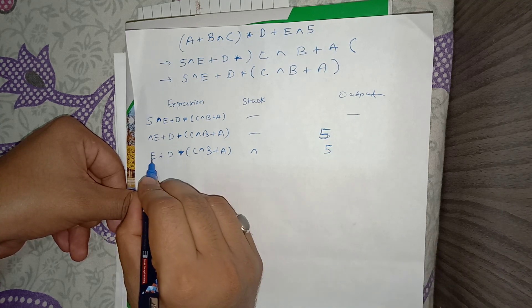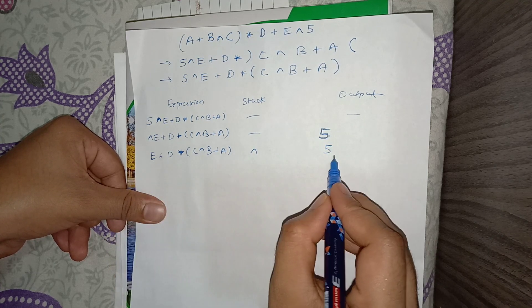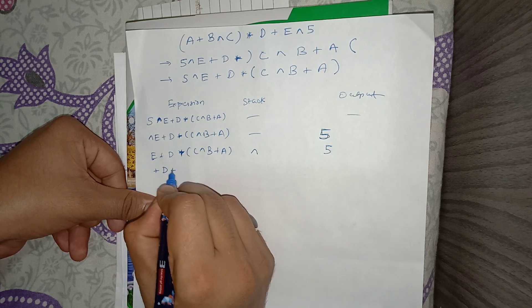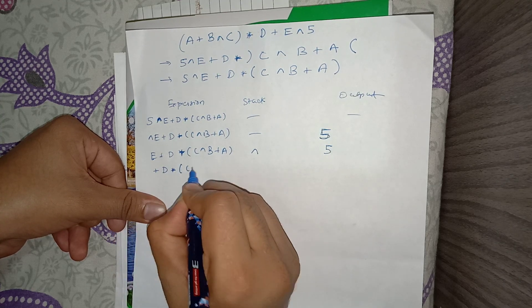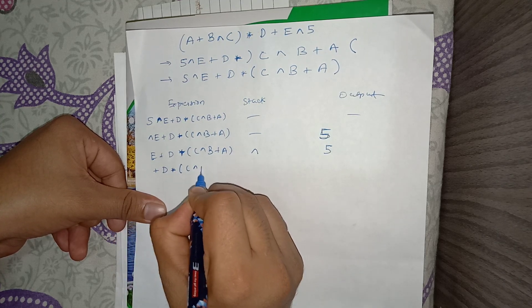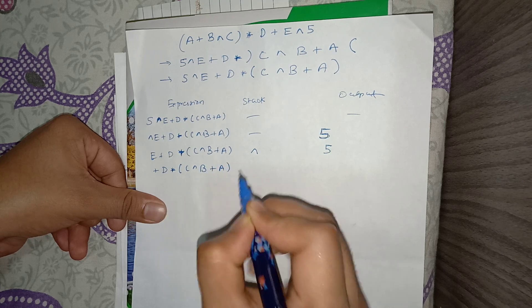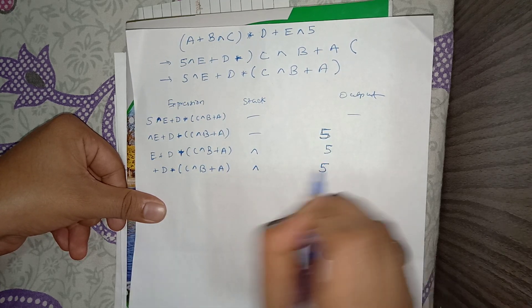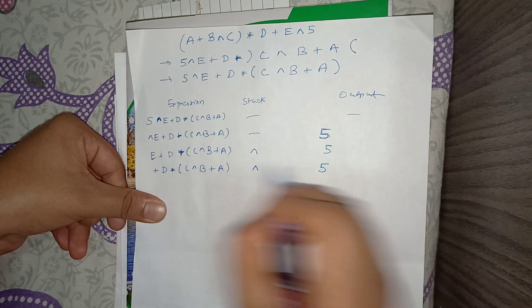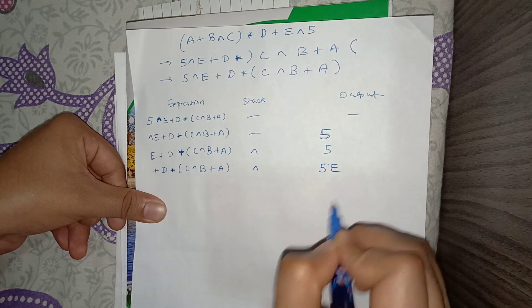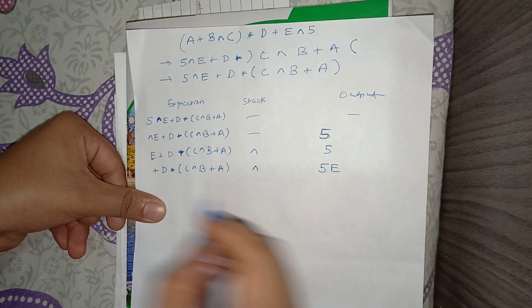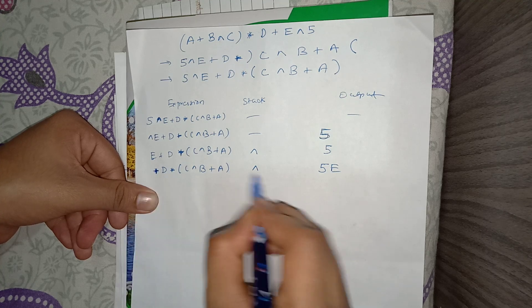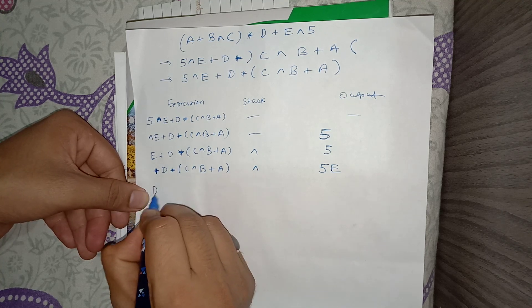The next token is E, which is an operand, so it goes directly to the output. The output is now 5, E. The next token is the plus operator, so we need to push it onto the stack.